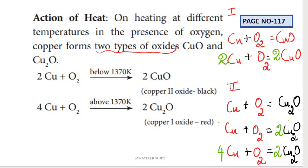Below 1370 Kelvin is copper 2 oxide. Greater than 1370 Kelvin is copper 1 oxide. The equations are easy to write.